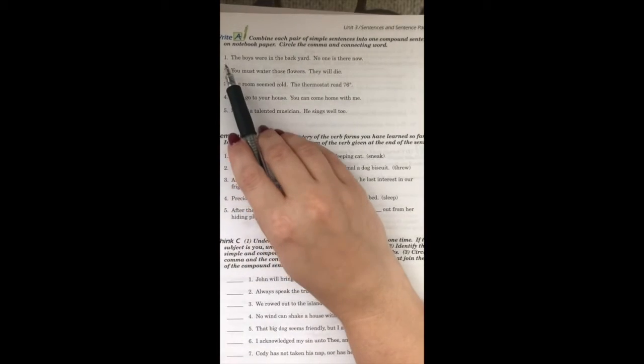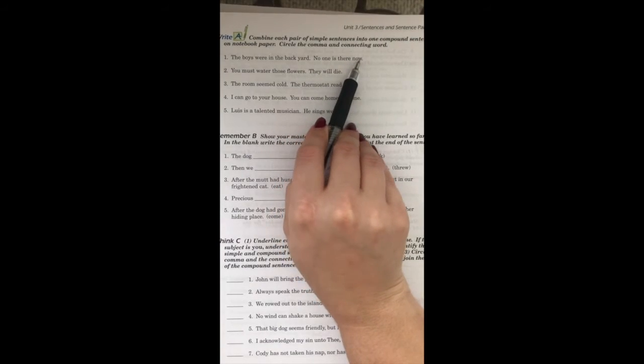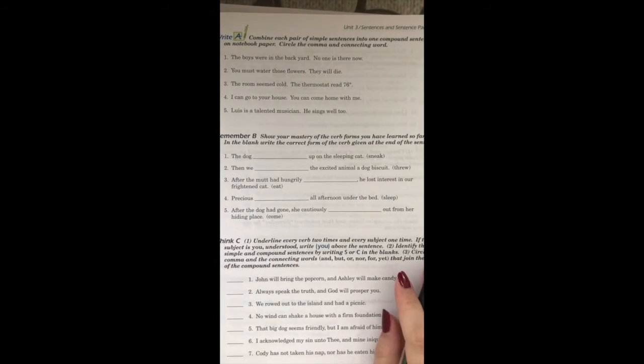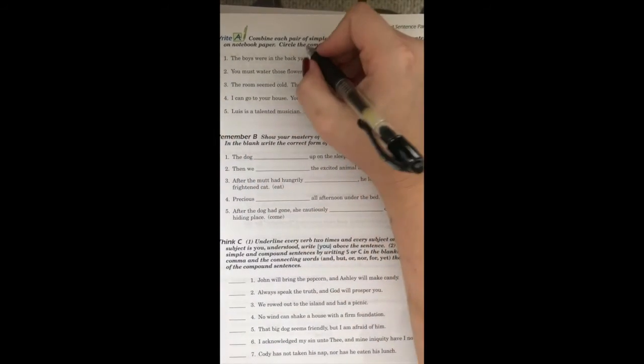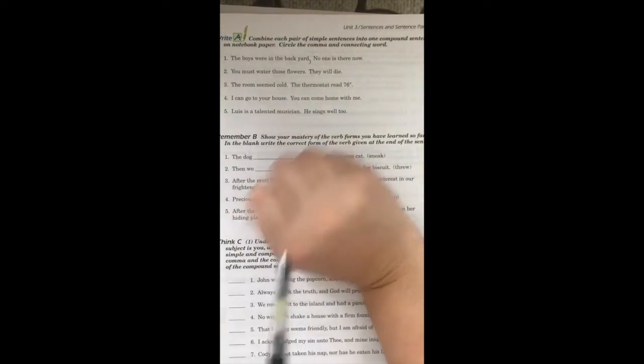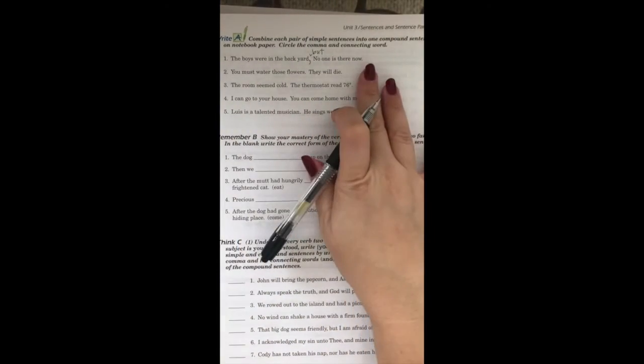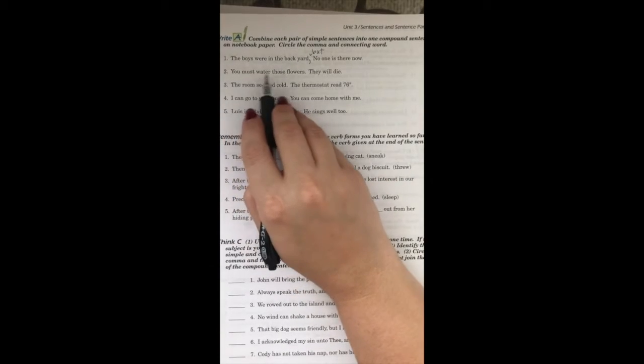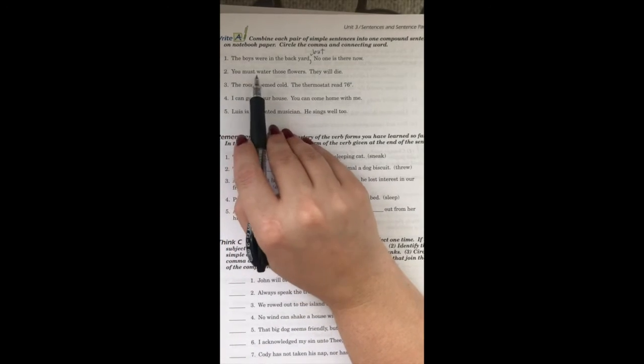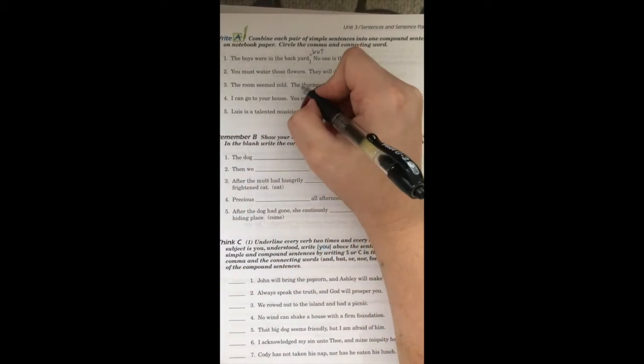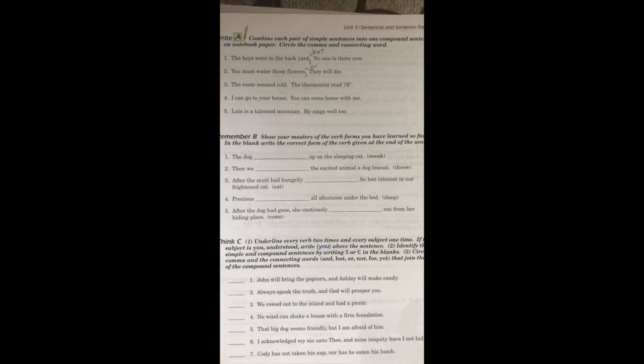It says here to combine each pair of simple sentences into one compound sentence on notebook paper. Circle the comma and connecting words. So that just means you should put a comma before your connecting word, as we saw on our previous page. All you're doing is, for example, I'm going to do it with you. Number one says, the boys were in the backyard. No one is there now. So you're going to choose the best connecting word to connect those two sentences. You could write, the boys were in the backyard, comma, but no one is there now. You must water those flowers, comma, or they will die.